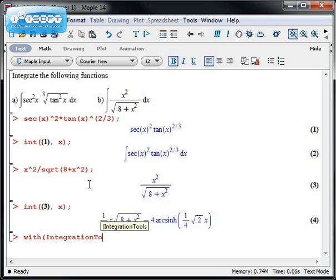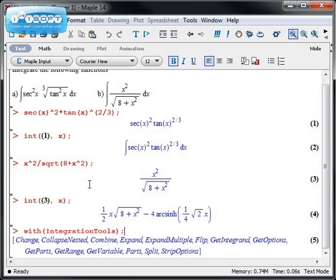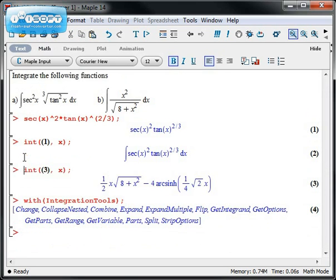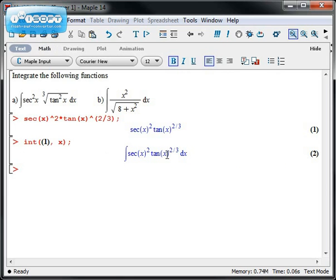If we type in integration tools, we get a list of new functions we can work with. The one we want to use for substitutions is called change. Here's how change would work. Let's go up to this first example. This was an integral Maple couldn't work out. The command is change. You have to tell it what integral you'd like to substitute into, so I'm going to tell it line number two, and then what substitution you'd like to do.